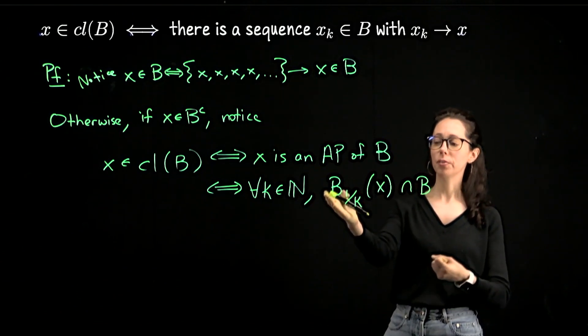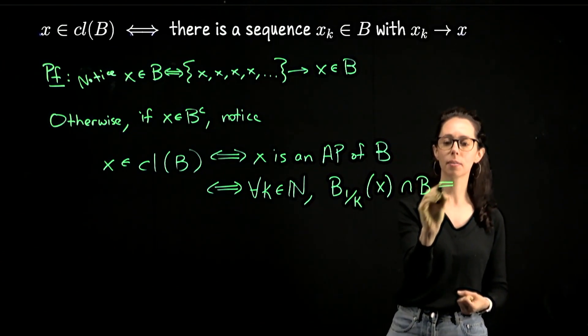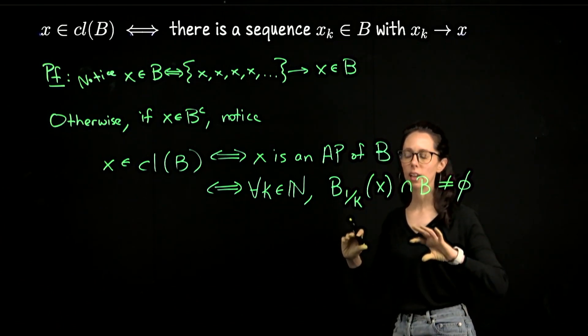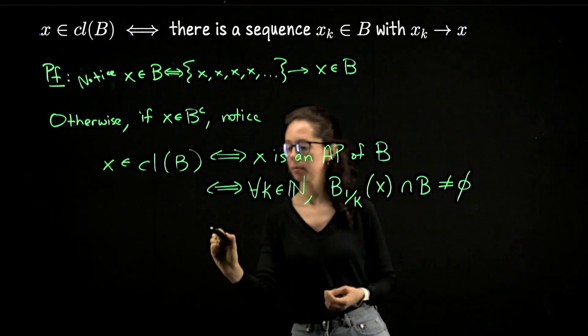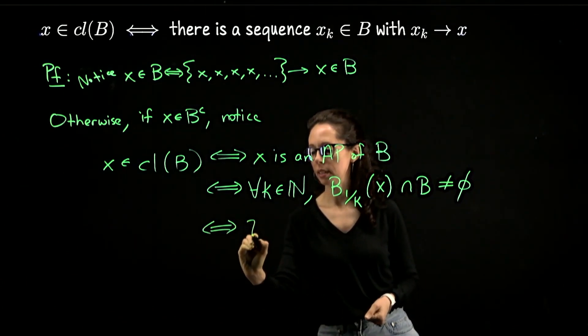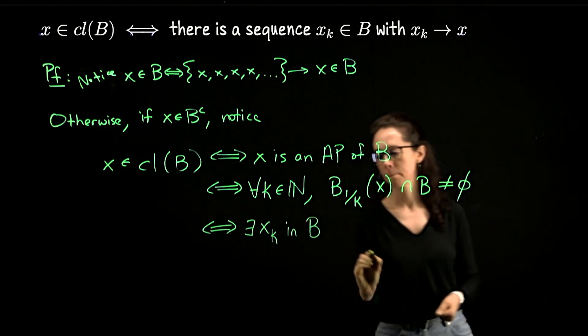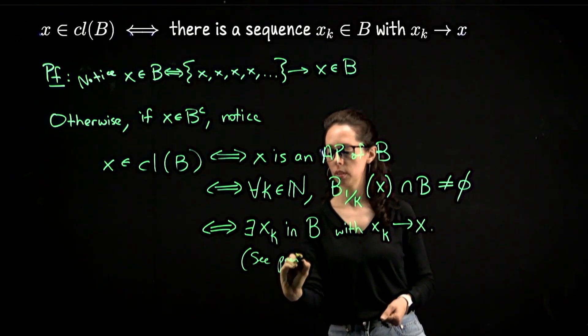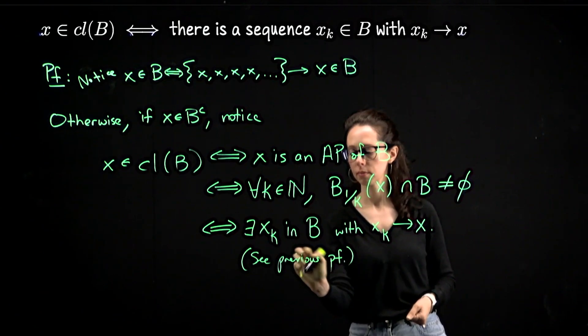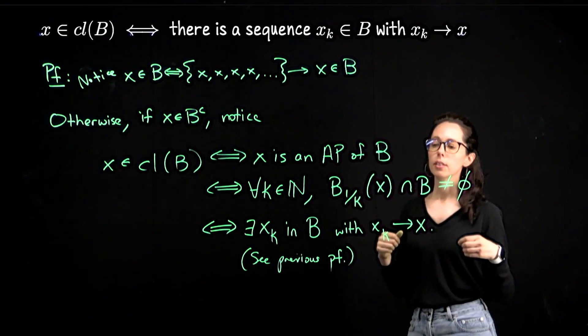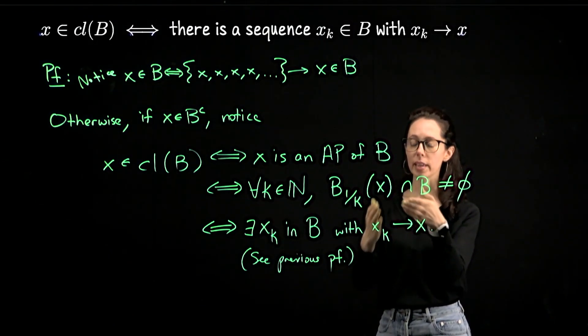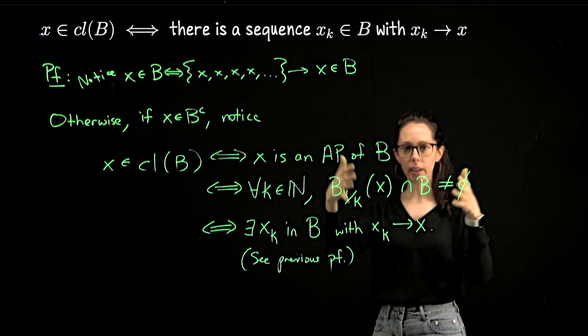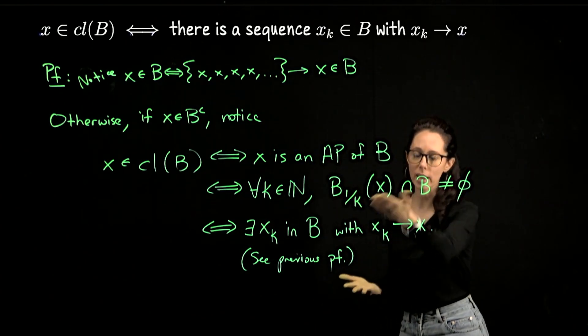I just realized I'm kind of overusing the letter capital B here. Hopefully it's clear this is talking about a neighborhood. This is the original set. I'm going to be a little bit casual here and appeal to the previous proof that we just did. So this happens if and only if there exists a sequence x_k in B with x_k tending to x. And here I'm going to write see previous proof. So from here to here, this is the construction that we just did. So we said, hey, if this intersection is not empty, form the sequence by picking points from the intersection and then let k go to infinity.